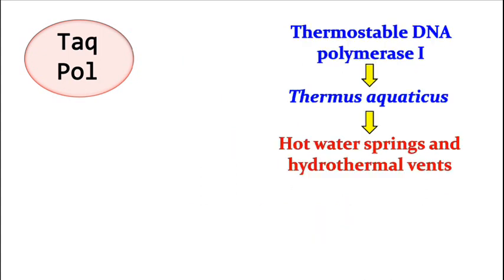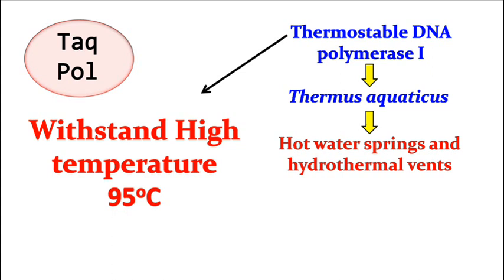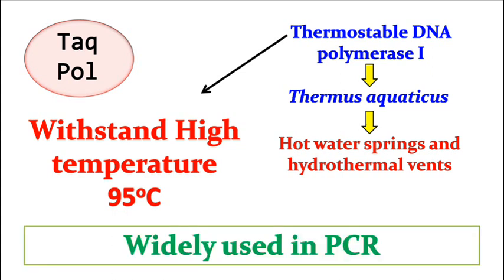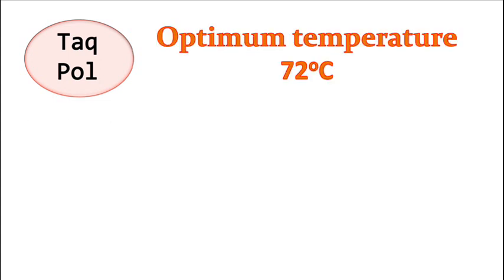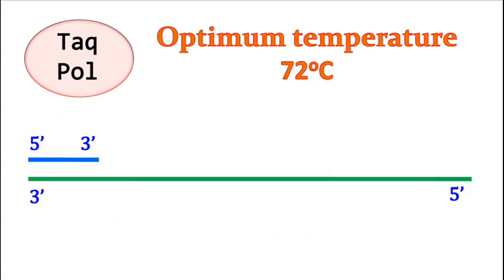It can withstand high temperatures of 95 degrees Celsius and is widely used in PCR. It has an optimum temperature of 72 degrees Celsius. At this temperature it can extend primer in 5 prime to 3 prime direction.